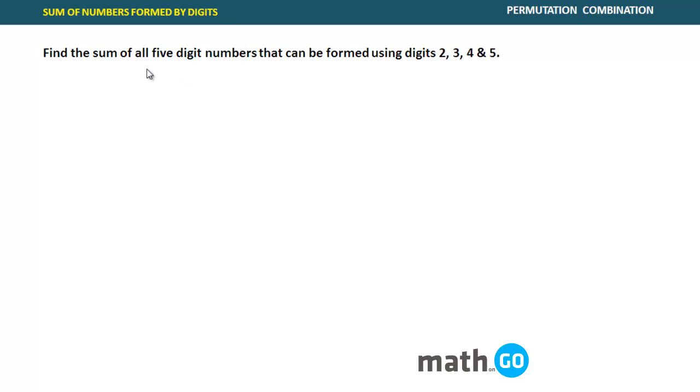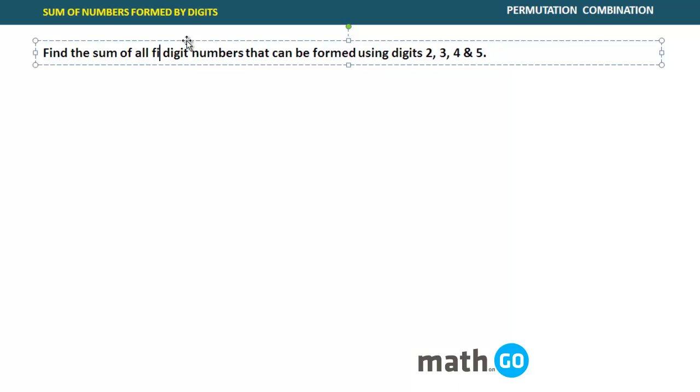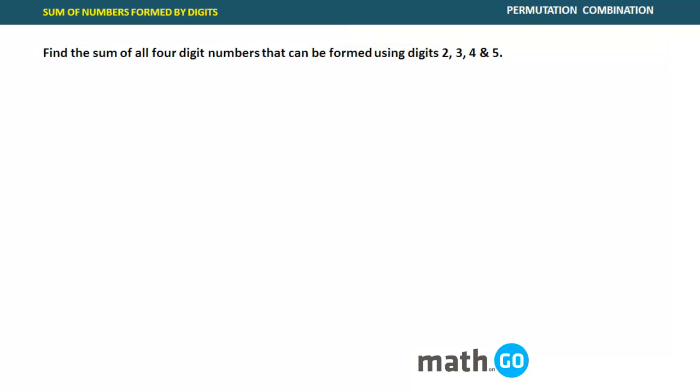It says find the sum of all - let's correct this, this is not 5, this is 4. This is sum of all 4 digit numbers that can be formed using digits 2, 3, 4, 5. Using 2, 3, 4, 5, you will have 4 factorial numbers. You want the sum of all 24 numbers. This is the target, sum of all 24 numbers.